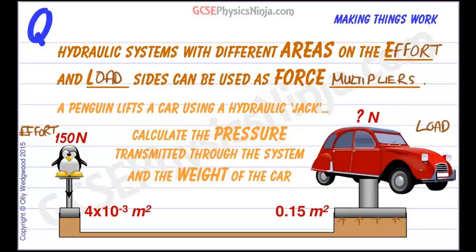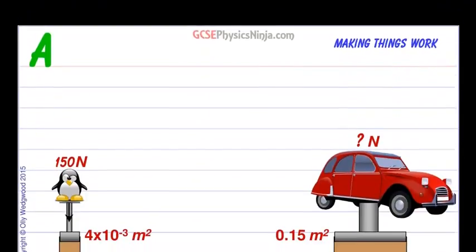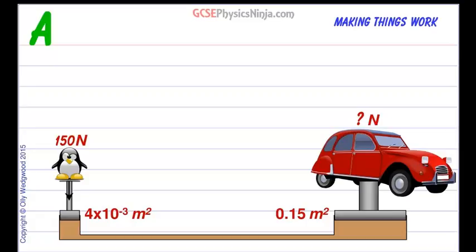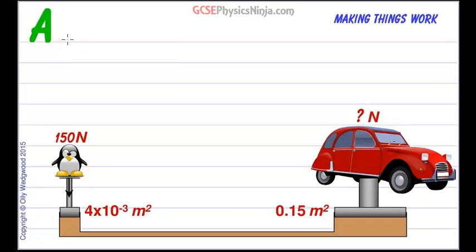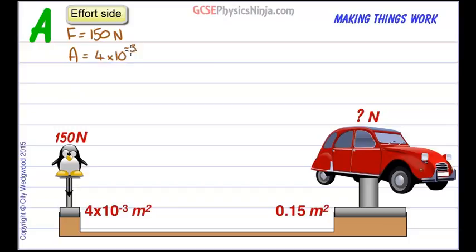So let's start off by calculating the pressure that's transmitted through the system, the pressure due to the weight of the penguin. Let's make a data list to start with. So the force, the weight of the penguin is 150 newtons. The area of the piston that the penguin is sitting on is 4 times 10 to the minus 3 meters squared. And we need to find the pressure. And because we're in newtons and meters squared, that's going to give us the pressure in pascals.